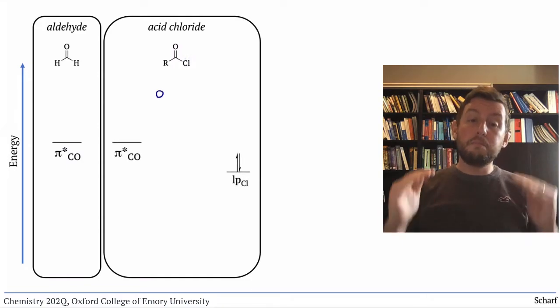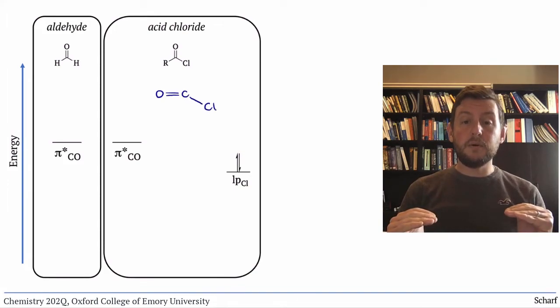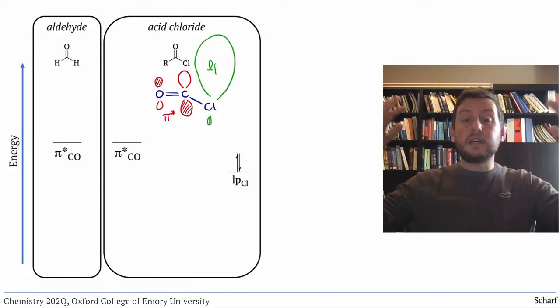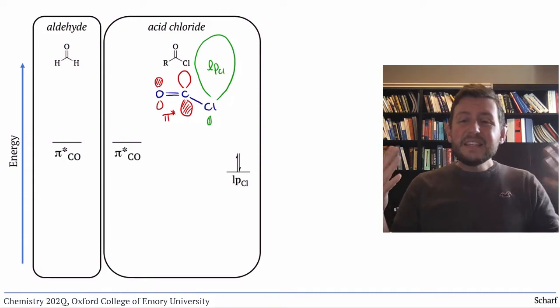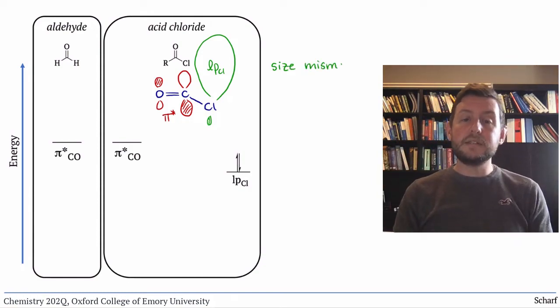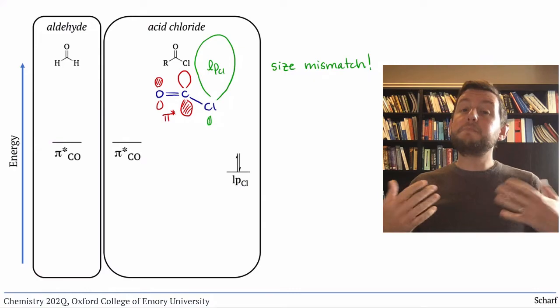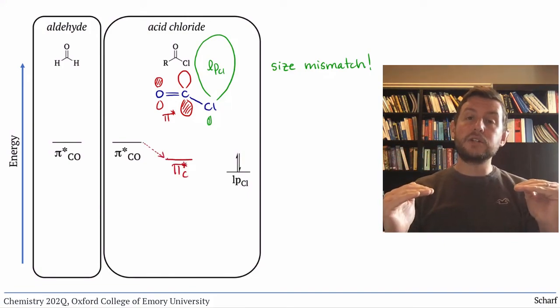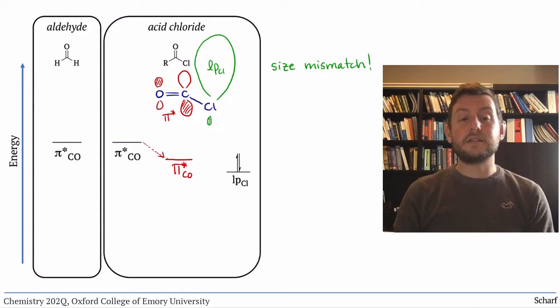Chlorine is in the row below carbon and oxygen on the periodic table, so it and its valence orbitals are significantly larger than that pi star orbital. This means that the lone pair doesn't physically overlap very well with the CO pi star orbital. That poor overlap, combined with the relatively high electronegativity of chlorine, actually lowers the energy of CO pi star for an acid chloride relative to an aldehyde. So acid chlorides are the most electrophilic of the carbonyl compounds we'll study.